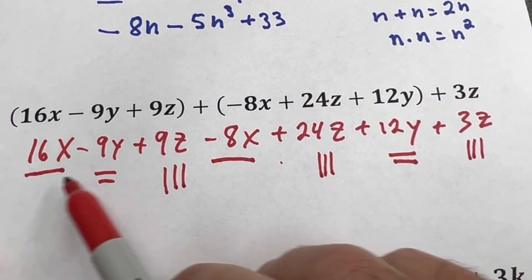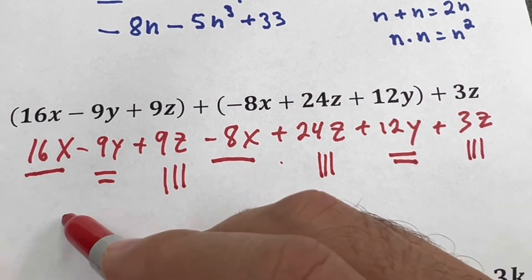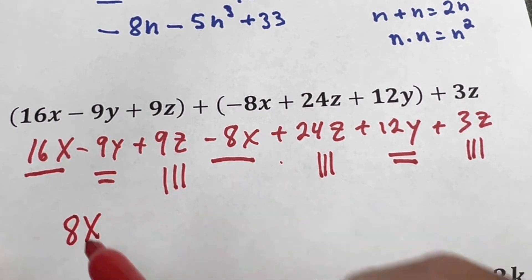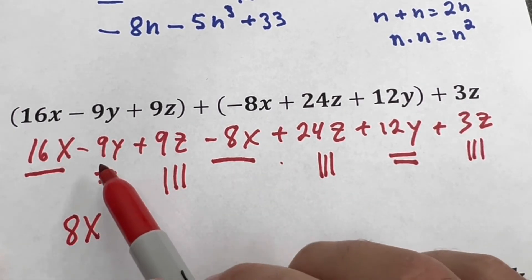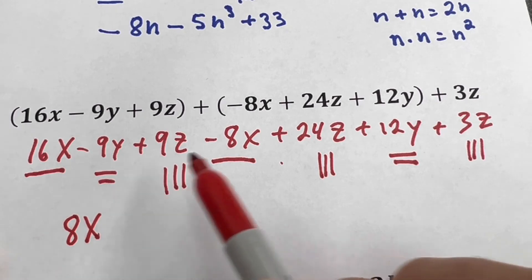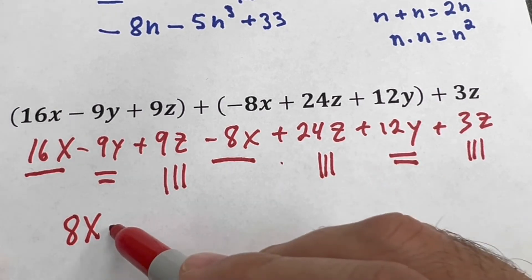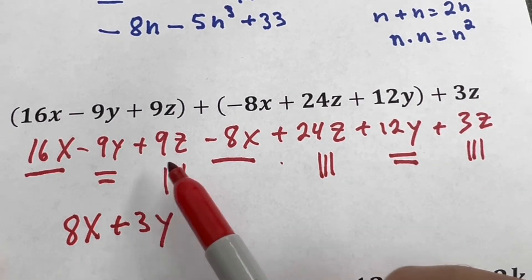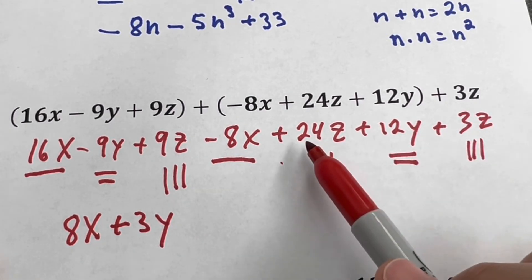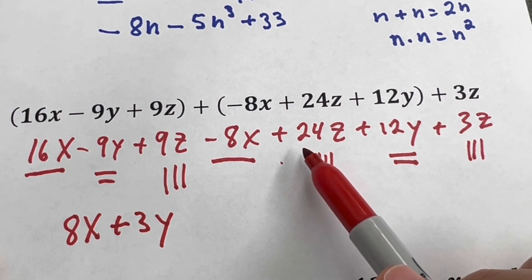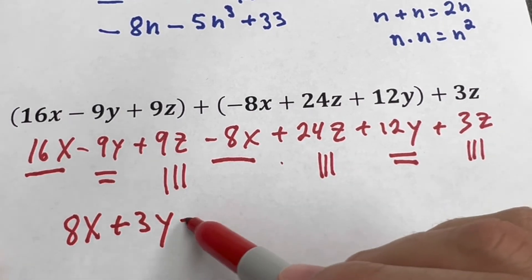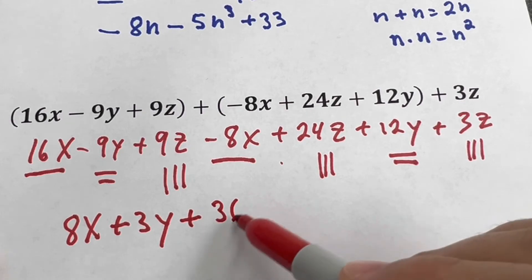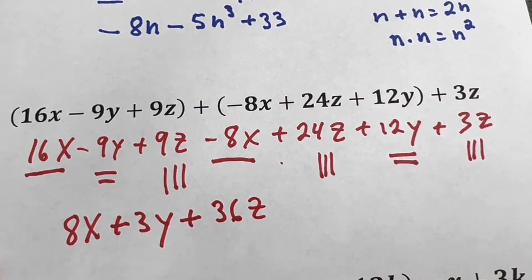And then I have z, z, and z. Now I go very easily to each of the variables. 16x minus 8x is 8x. Then I go to the y, so -9 and I have 12, so that would be 3y positive, plus 3y. And then I have 9, 24, and 3, so that would be 36z, plus 36z. And this is the answer.